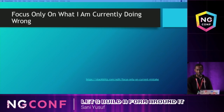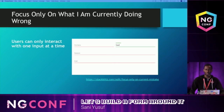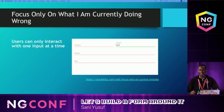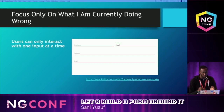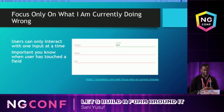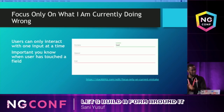Focus only on what I'm currently doing wrong. I know you have ten different input fields, but I want to just focus on what I'm doing wrong. Like, if I'm typing the last name and I haven't touched any other field, but the form is already telling me I need to enter a first name — can you just focus on what I'm doing? Users can only interact with one input field at a time. So that's very important. It's important for you to know when users are interacting, when they've touched something, when they've left.